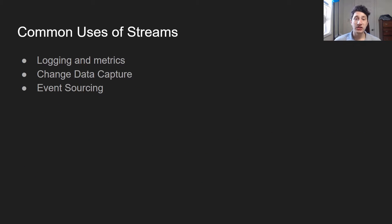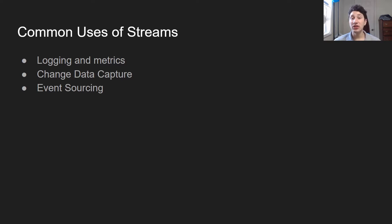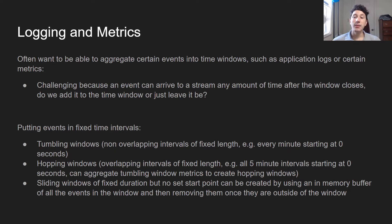So what are some common usages of streams? Right now I've kind of just defined them as some arbitrary things, but let's give some examples in order to help show everyone what they're actually useful for. One way they're hugely important is logging and metrics. When you're logging in an application, we don't really need to use the logs or the metrics instantly, but it's good to be able to look back on them and do some processing with them in order to make metrics for a certain time window. We want to be able to aggregate certain events into time windows, such as logs or the load on our servers.